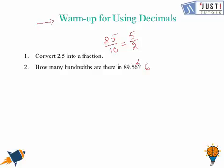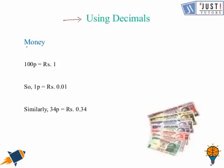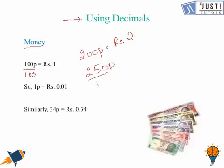Now we move ahead and we're going to learn about using decimals while working with money. As we all know, 100 paisa is 1 rupee, so 200 paisa is 2 rupees. To convert paisa into rupees, we divide it by 100. So if it is 250 paisa, we divide it by 100 and that would be rupees 2.5.